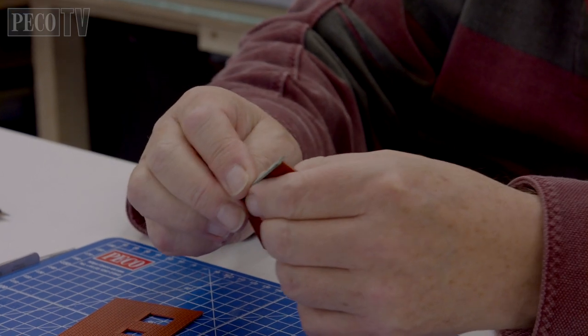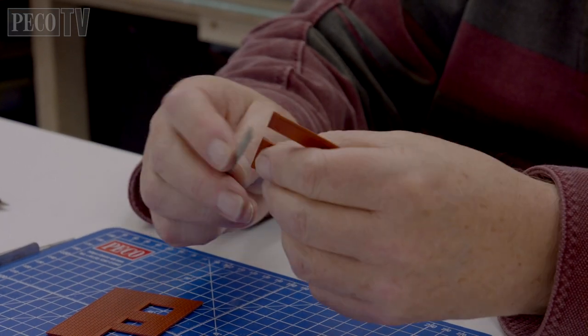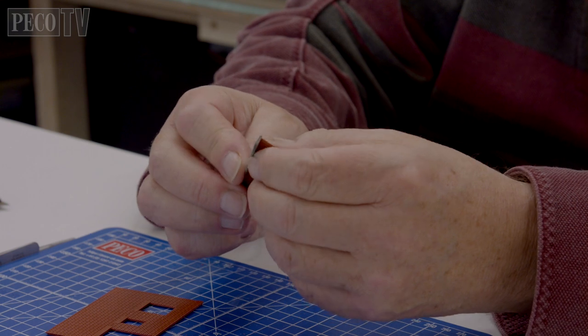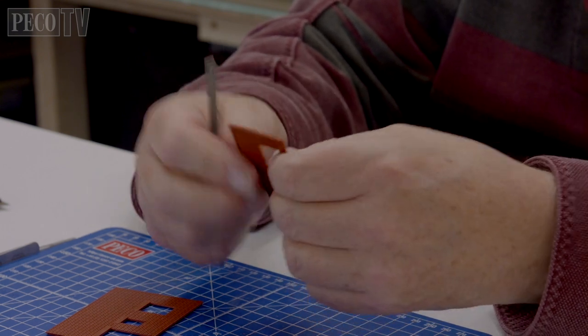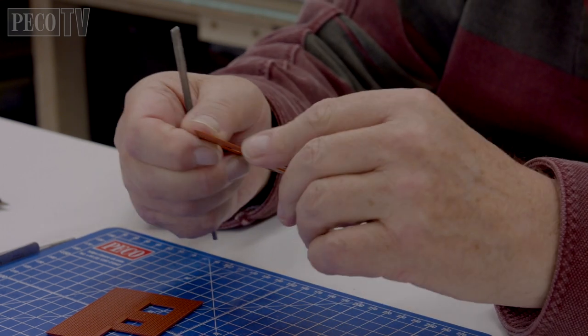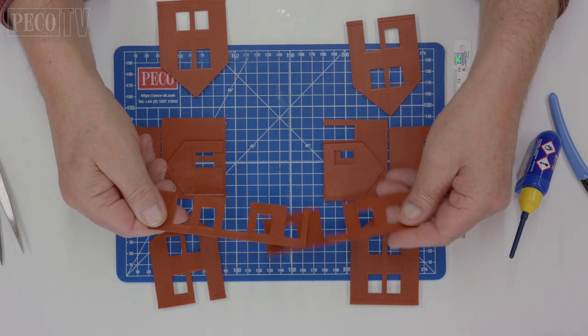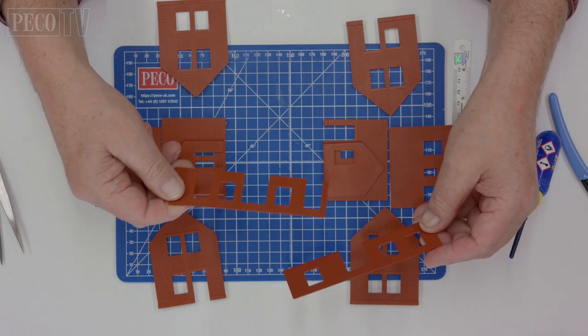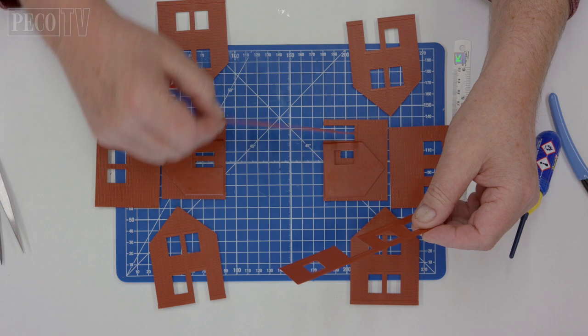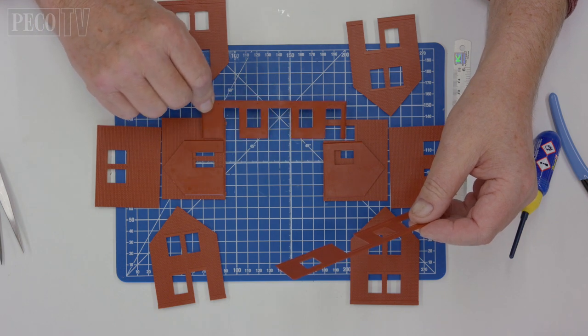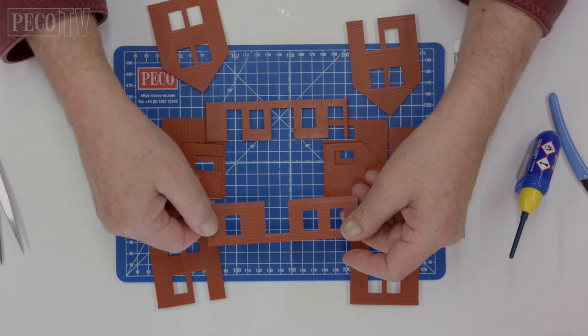Then take each component and remove any plastic burrs or rough edges from all the kits parts using a Stanley knife or a file to clean the edge. Now you have prepared all your components for both kits you need to bring the walls together and lay them out in the desired configuration as shown here.